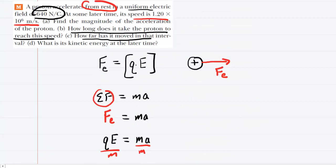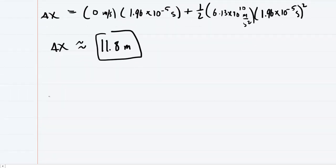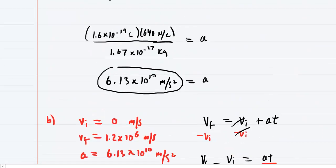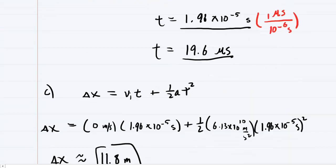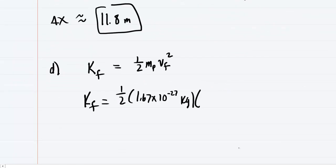Finally, part D wanted the kinetic energy at the later time. The initial kinetic energy, of course, is 0 because it wasn't moving. But the final kinetic energy will equal 1 half times the mass of the proton times its final speed squared. Again, the mass of the proton is about 1.67 times 10 to the minus 27 kilograms. The final speed was determined earlier as... oh, it wasn't determined, it was given to us. Right, it was 1.2 times 10 to the sixth.